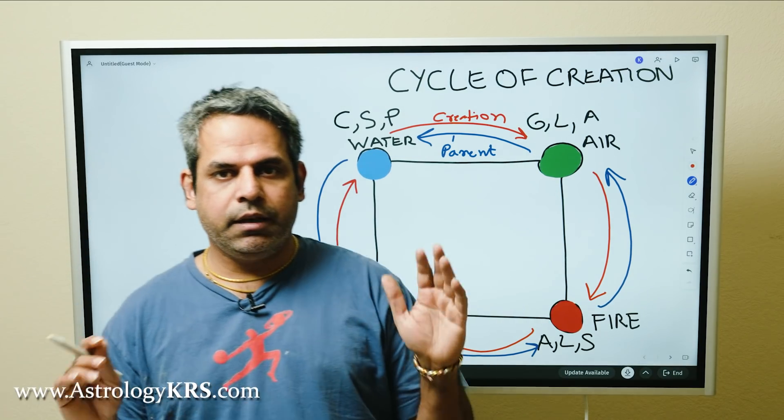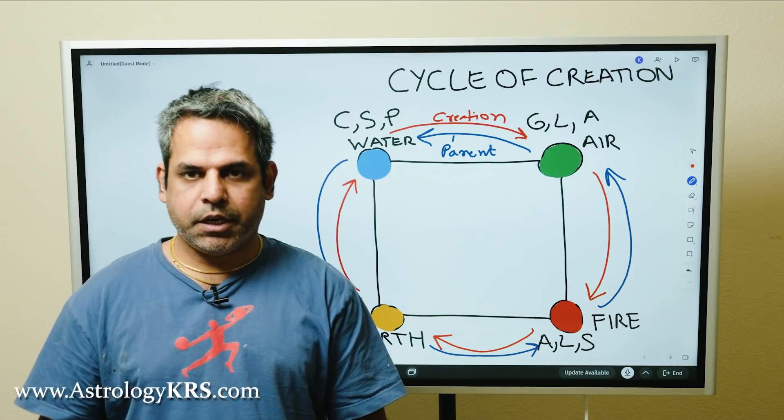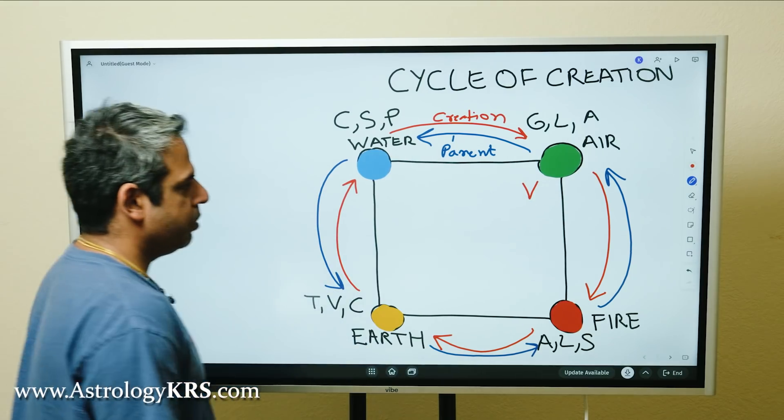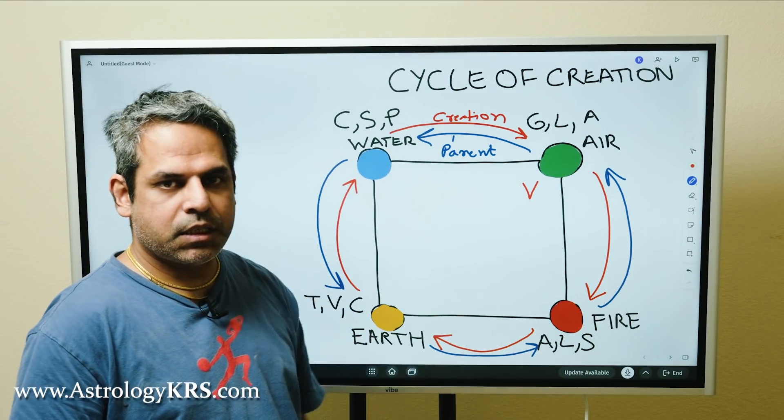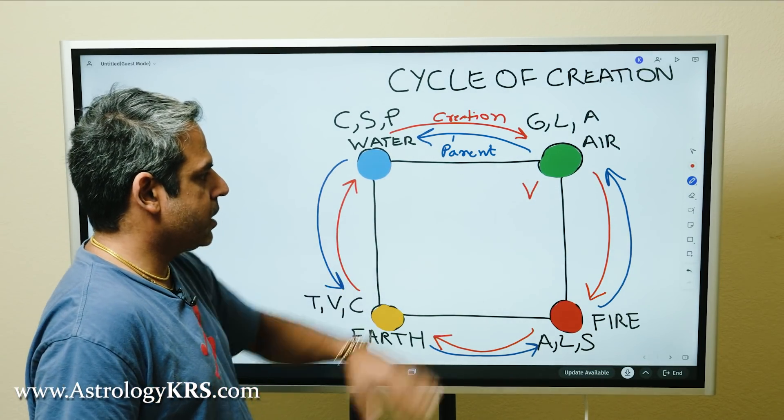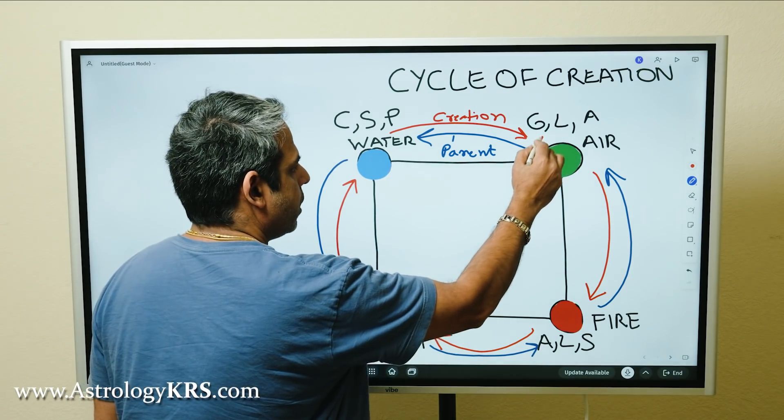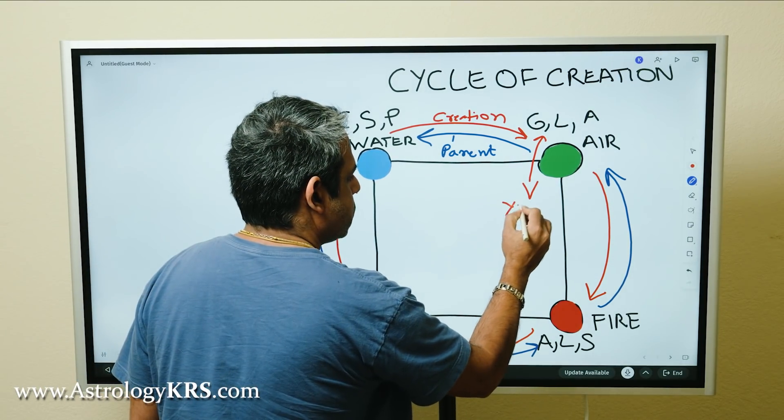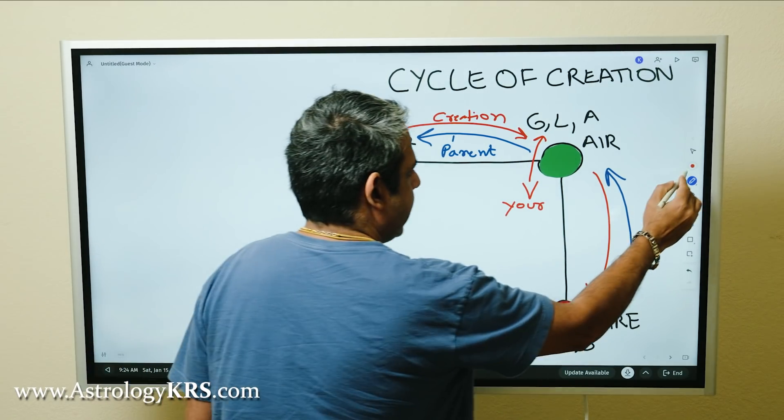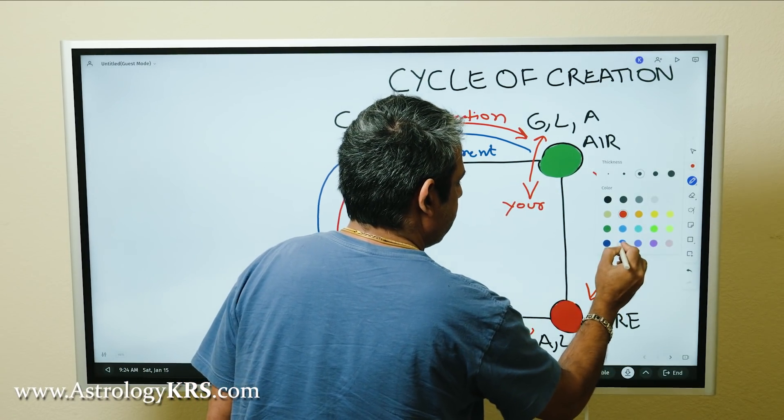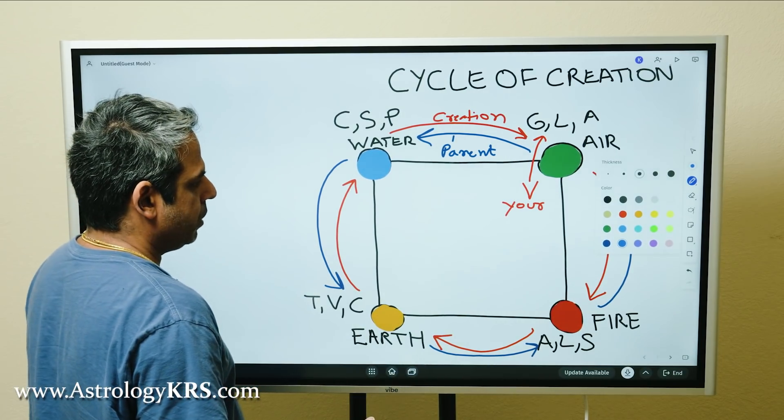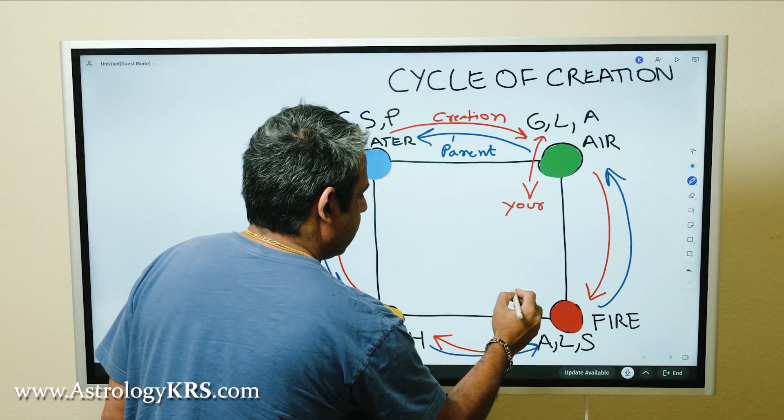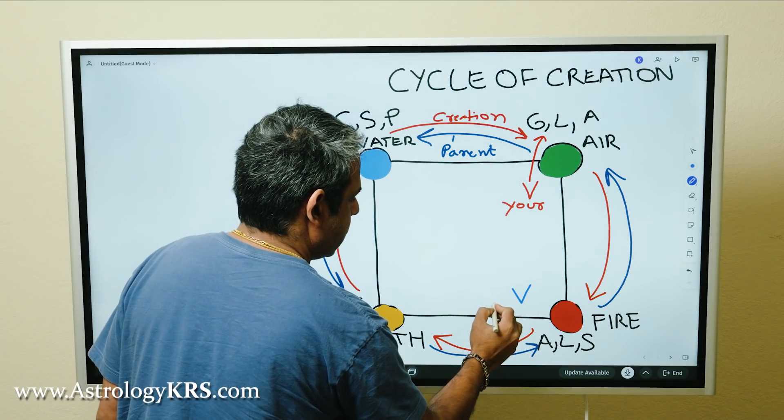Now in a horoscope, in a particular birth chart, you have Venus in an air sign - it could be Gemini, Libra, or Aquarius. So this is let's say your Venus, and then your partner's chart, Venus is here.